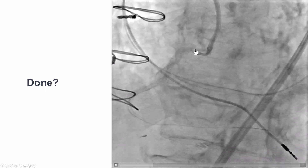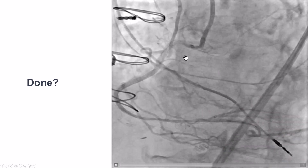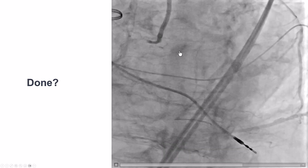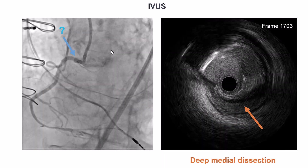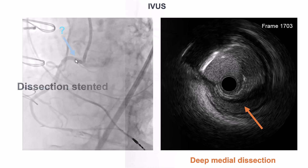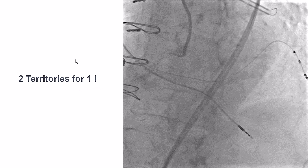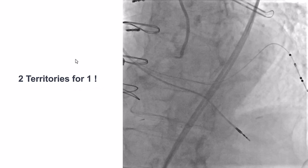Were we done? When we looked more carefully at the proximal RCA, it looked a little unusual. We repeated the intravascular ultrasound and found a large dissection in the proximal segment — likely a guide-induced dissection of the proximal right coronary artery — which was treated with another drug-eluting stent.